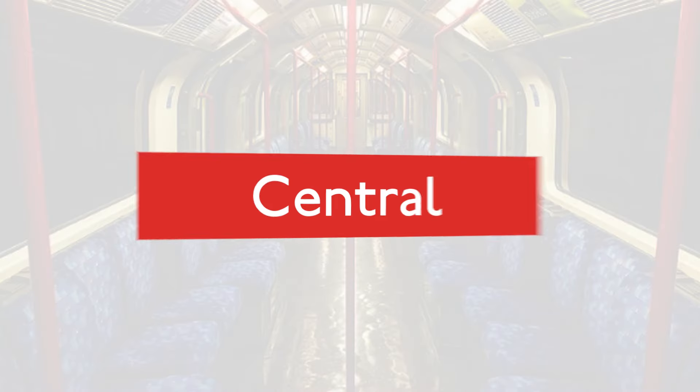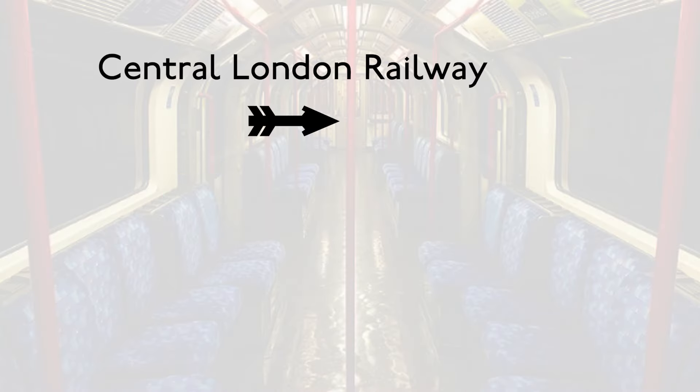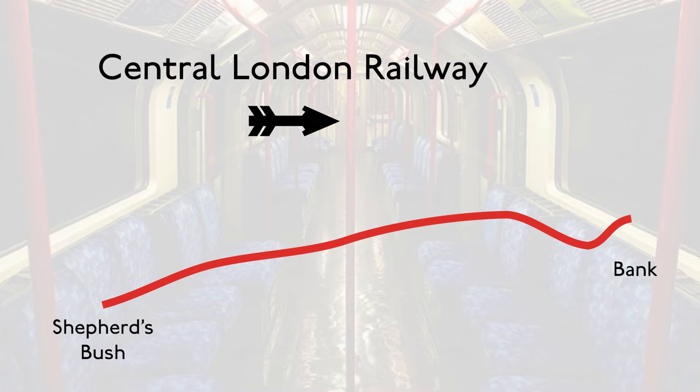In 1900, the Central Line started life as the Central London Railway, running between just Shepherd's Bush and Bank, but soon extended outside of Central London. Epping, after all, is in Essex, and thus the London part soon got dropped as it now went outside of the capital, and the word Central simply stuck.